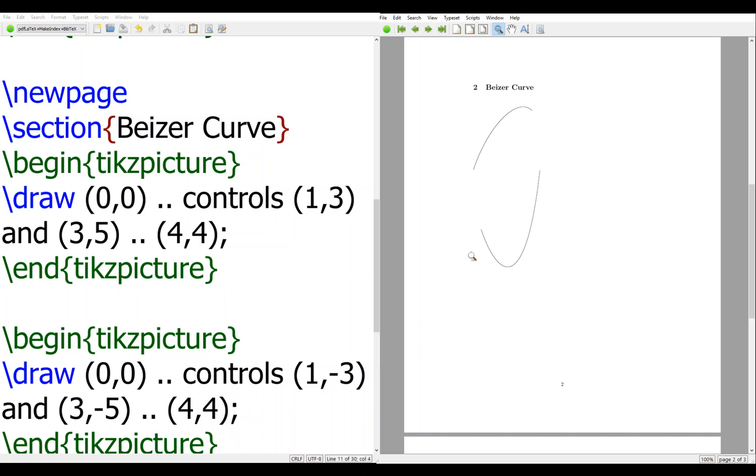Okay. And the other one is, control is also from 0,0 to 4,4. It's 1, negative 3, and 3, negative 5. So, this is how you draw the Bezier curve.